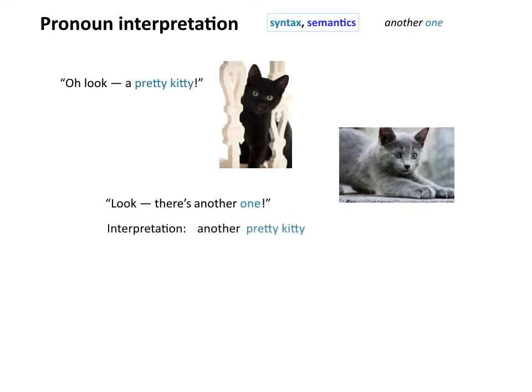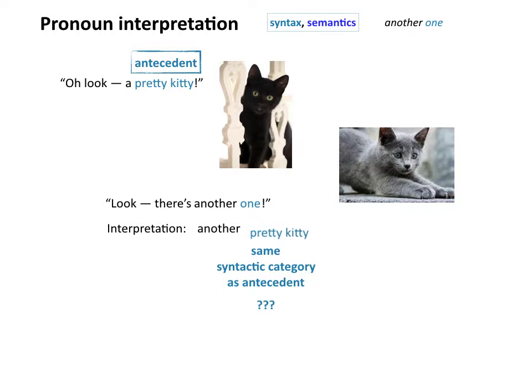Let's look at the 'another pretty kitty' interpretation, where 'another one' means 'another pretty kitty.' The idea is that 'one,' like any pronoun, is going to look for something of the same syntactic category to be its antecedent — the phrase or string that it refers to. So what syntactic category is 'pretty kitty' exactly?